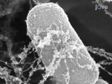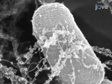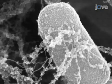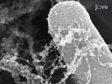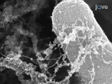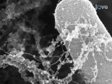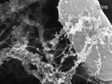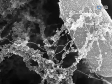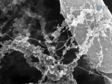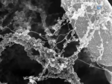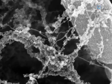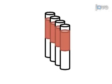Neutrophil extracellular traps, or NETs, are a recently identified mechanism for neutrophil-mediated clearance of pathogens. By releasing a combination of cytoplasmic and granule proteins, as well as chromatin, neutrophils form extracellular fibres that trap pathogens.